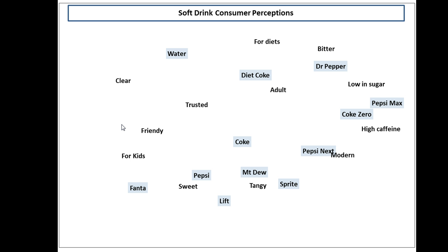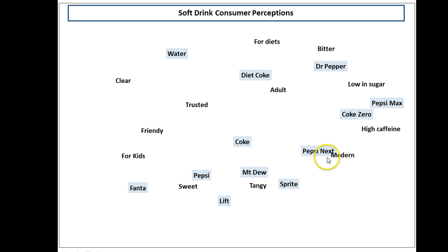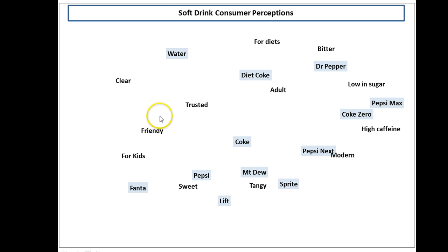Normally we just pick a couple of them, say Trusted and Modern or something like that, and they would form our two axes of a traditional perceptual map. This map allows us to see the overall market with all the attributes listed at the same time.